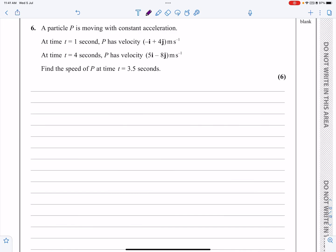Okay, this is the M1 paper from May 2022, question number six. Let's have a look at it. It says we've got a particle moving with constant acceleration, so it's probably a SUVAT question, but we also have vectors involved. It's going to be a mixture of the two different topics.